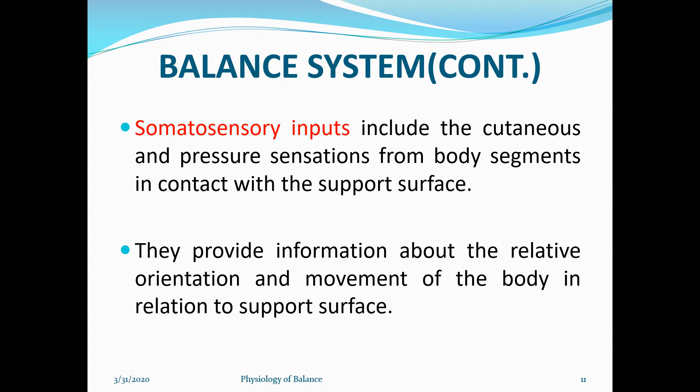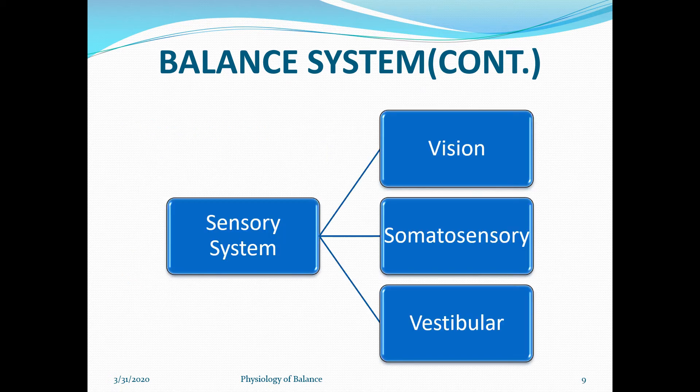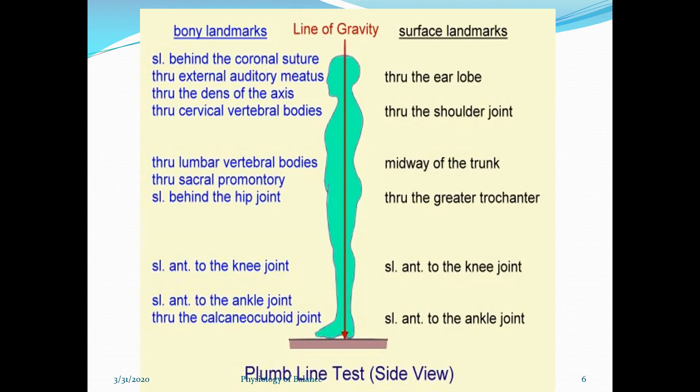Somatosensory inputs include cutaneous and pressure sensations from body segments in contact with the supporting surface. They provide information about the relative orientation and movement of the body in relation to the supporting surface. Going back to the plumb line, the most important somatosensory inputs come from the foot, ankle, knee, hip, trunk, and then the head. The ankle joint in particular is most helpful in providing somatosensory inputs to the brain about body alignment.